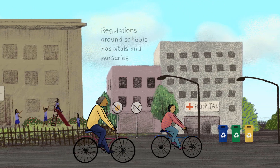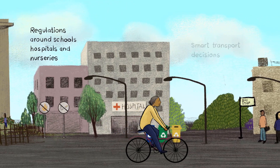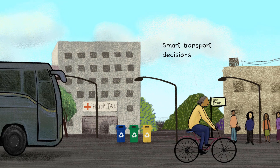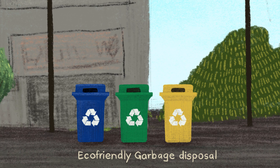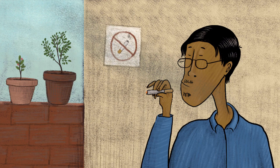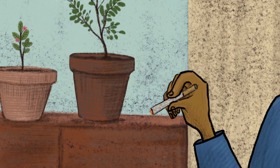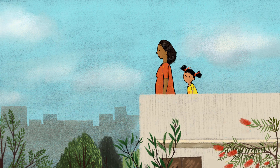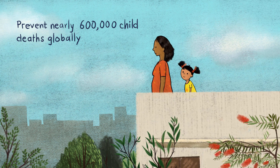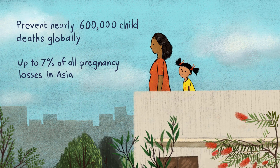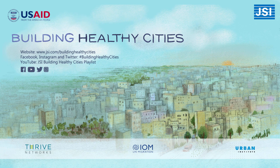We can do this by telling your city to enforce regulations especially around schools, hospitals, and nurseries; making smart traffic and transport decisions; using clean gas stoves; finding alternative garbage disposal options; and helping each other quit smoking. Combined, these actions could prevent 600,000 child deaths globally and up to 7% of all pregnancy losses in Asia. BHC is supporting both city governments and citizens to improve their air quality through some of these actions.